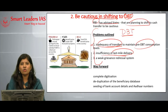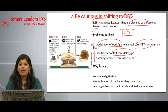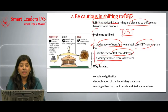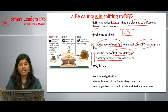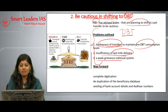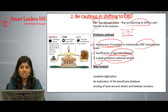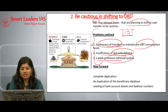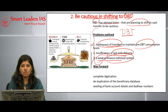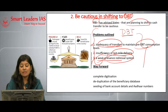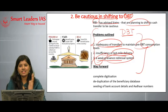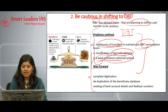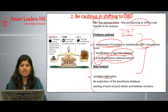The third problem is a weak grievance redressal system. If people are not receiving the direct cash they are entitled to, they need a mechanism to complain and get what they deserve. However, the grievance redressal mechanism in the government is not strong enough. These are the major problems in implementing DBT, causing it to deviate from its original aims.